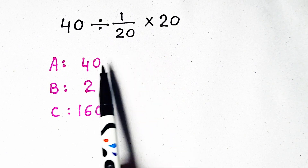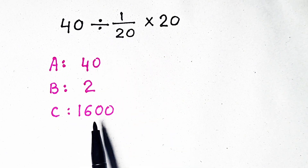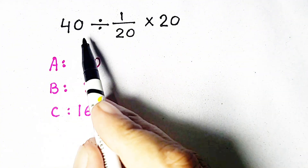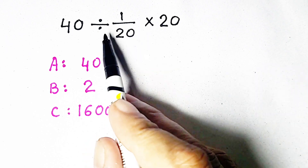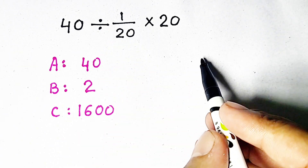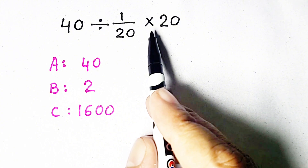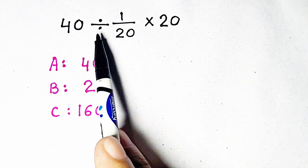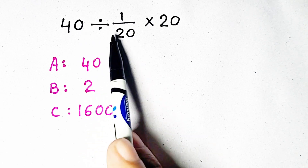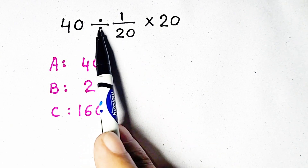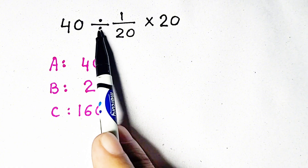Now verify it. Which option is correct? Dear students, we will apply the DM rule — the Division-Multiplication Rule. We have to move from left to right, meaning we have to solve division first because it is on the left.